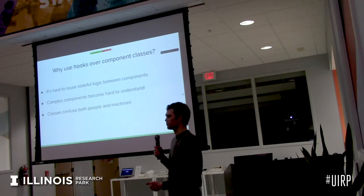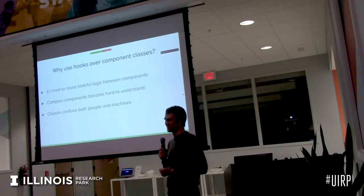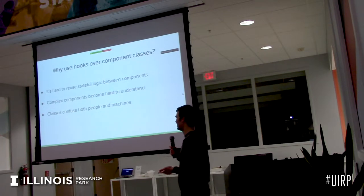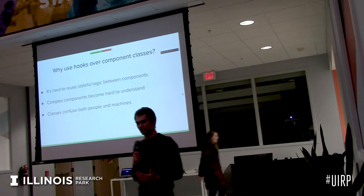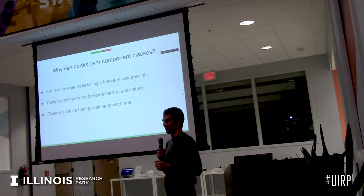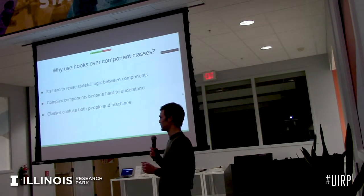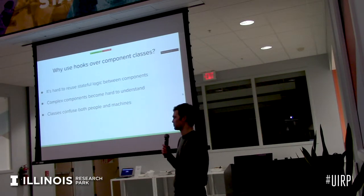Classes confuse both people and machines. Even the most seasoned JavaScript developer still has trouble understanding what 'this' is and why they have to bind functions. And classes, especially in React, are not really the most natural way to go because you're inheriting from the React.Component class, but you never inherit from a component that you create — it just seems like a weird mismatch against the paradigms that the React developers have presented.